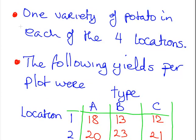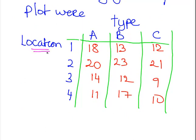That would be a little bit clearer when we get to the data. So one variety of potatoes in each of the four locations. The following yields per plot were as follows. So here are our four locations. We have location set up along the rows. That is going to be our A variable, our factor A. And type along the columns, that is going to be our factor B. Those are the yields for each plot for each type of potato. For example, in plot 1 we had a yield of 18 for A, 13 for B, and 12 for C, and so on.